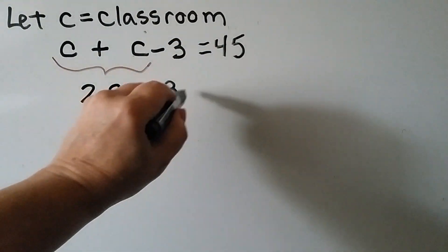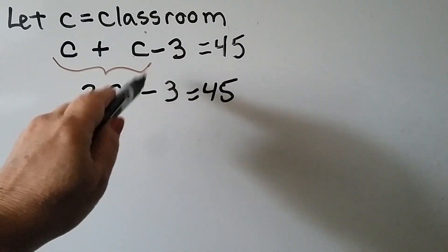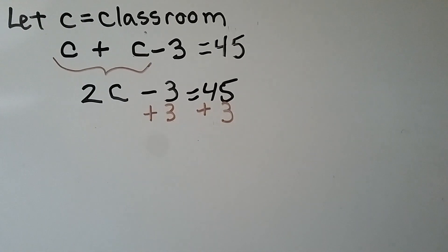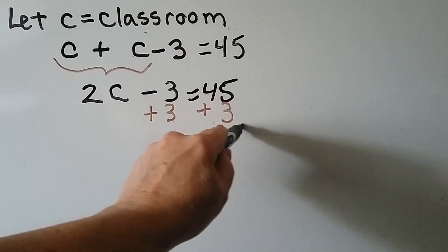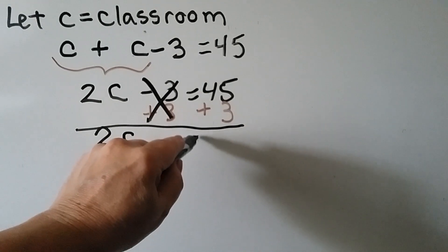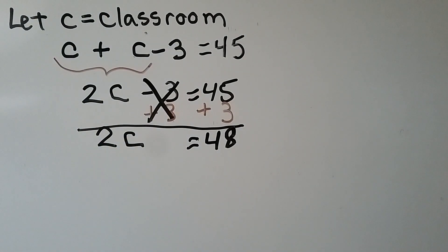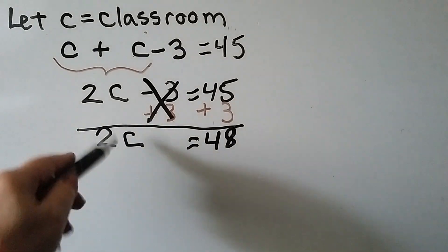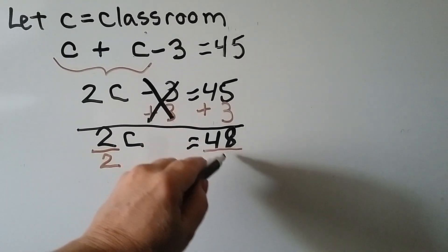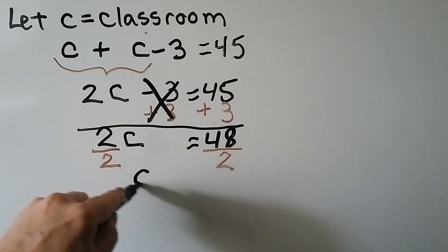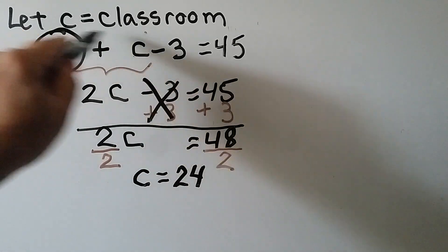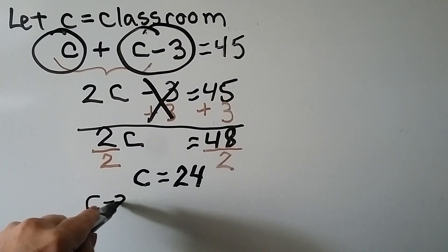To get rid of this minus three, we do plus three to make a zero pair. We do it to both sides of the equal sign — we have to be fair and do whatever we do to one side to the other side. Now we've got 2c. We made a zero pair, so minus three plus three is zero. And it's equal to 48. Because this means multiplication — two times some number c — we can use the inverse of multiplication, which is division, to isolate c. We divide both sides by two and get c is equal to 48 divided by 2, which is 24. So if c is equal to 24, then c minus 3 is equal to 21.